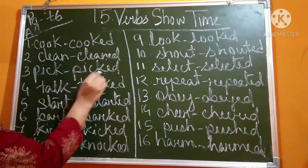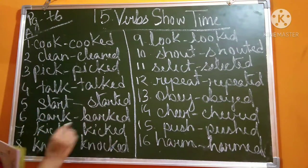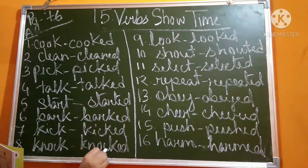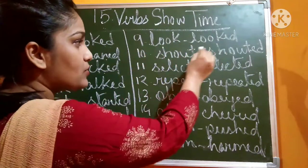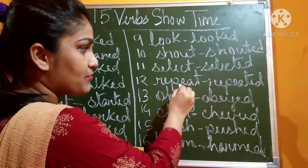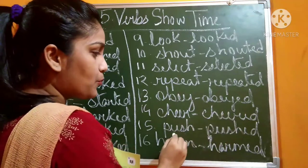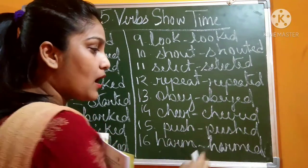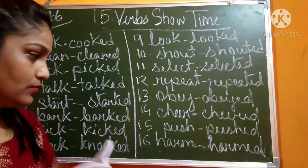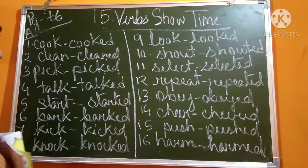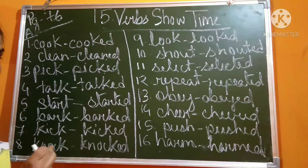Let's go through the verb list: 'clean' → 'cleaned', 'pick' → 'picked', 'top' → 'topped', 'start' → 'started', 'bark' → 'barked', 'kick' → 'kicked', 'knock' → 'knocked', 'look' → 'looked', 'shout' → 'shouted', 'select' → 'selected', 'repeat' → 'repeated', 'obey' → 'obeyed', 'cheer' → 'cheered', 'push' → 'pushed', 'hum' → 'hummed'. Numbers 17 and 18 you can do in your copy — just put 'ed' at the end, it is very easy.